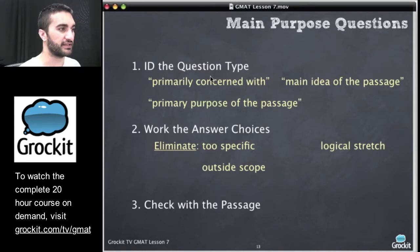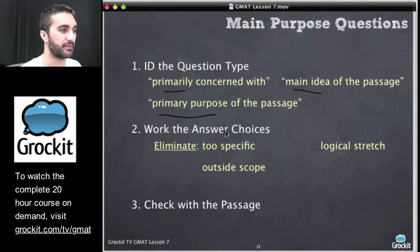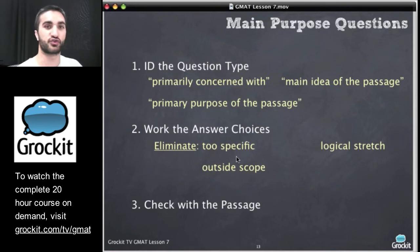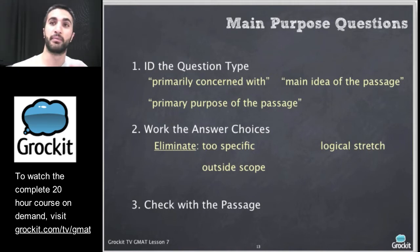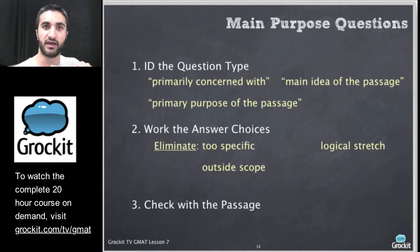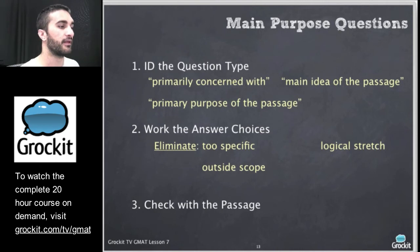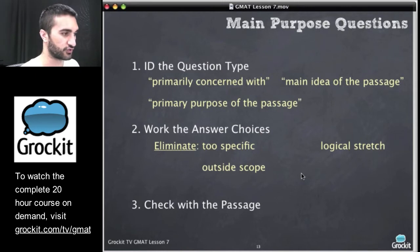Last week we looked at main idea and main purpose questions, and we said to ID the question using language like 'primarily concerned with,' 'main idea,' or 'primary purpose.' We want to eliminate answer choices that are too specific, because if an answer choice is referencing just one very specific thing the passage pointed out, your mind thinks it was in there — but that's not answering the question. That's why we go back and forth between the passage, the question, and the answers — to make sure the answer isn't just matching the passage, but also the actual question. Outside of scope and too big a logical stretch are also red flags.